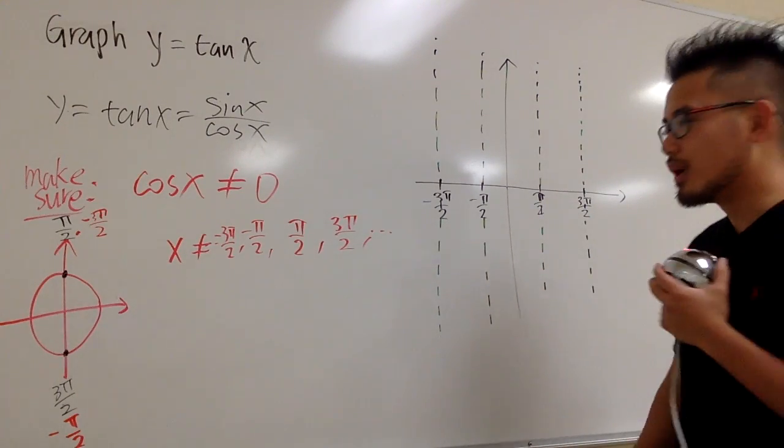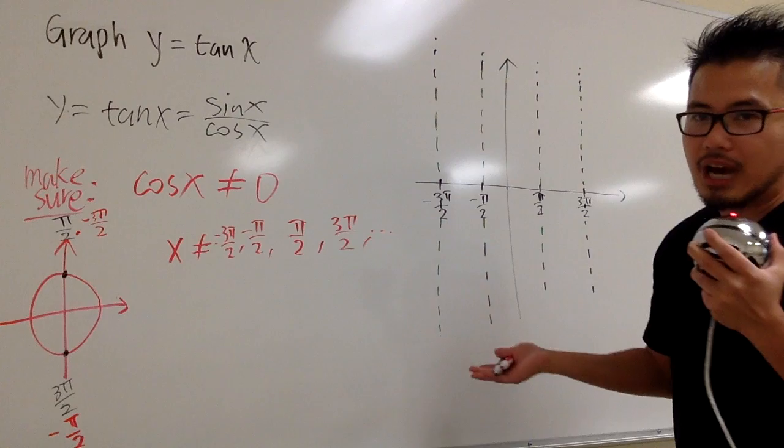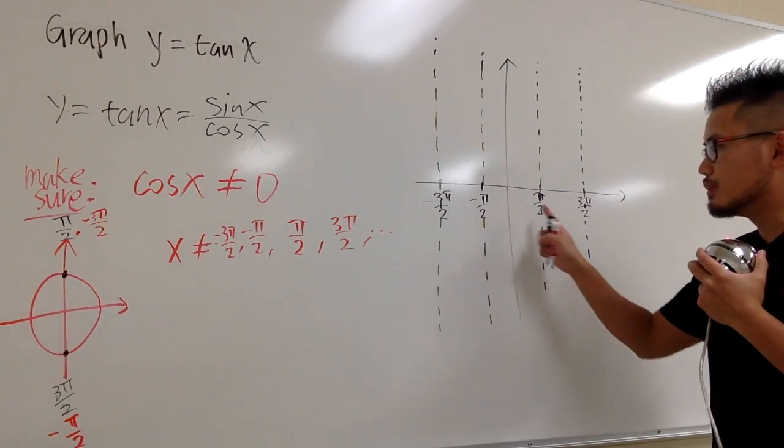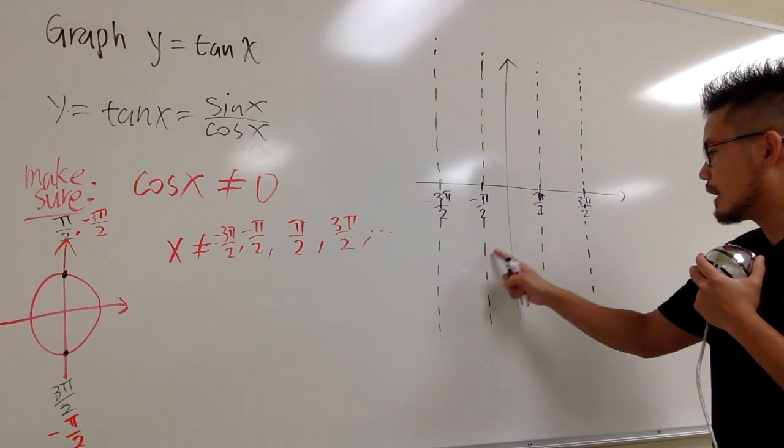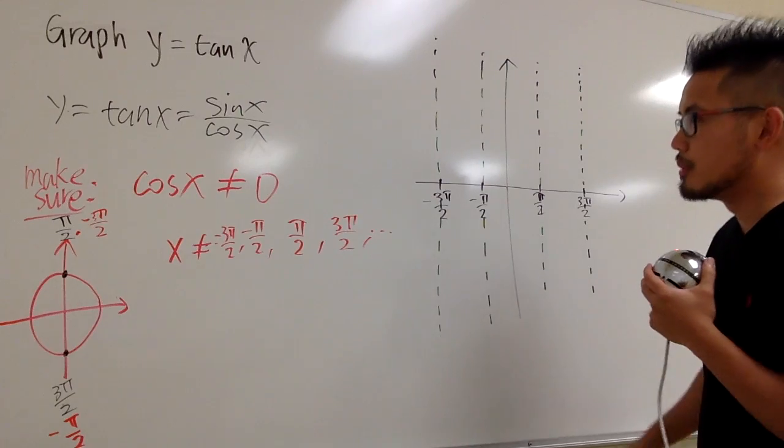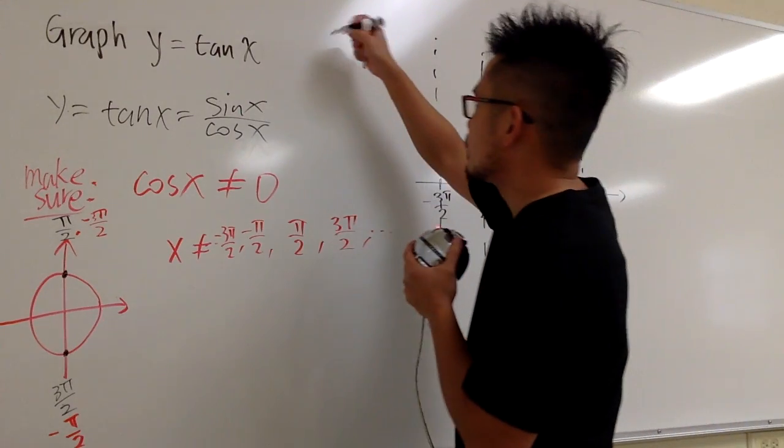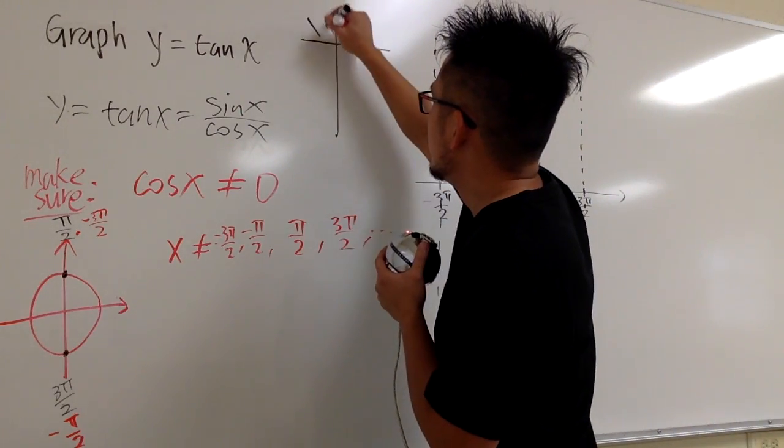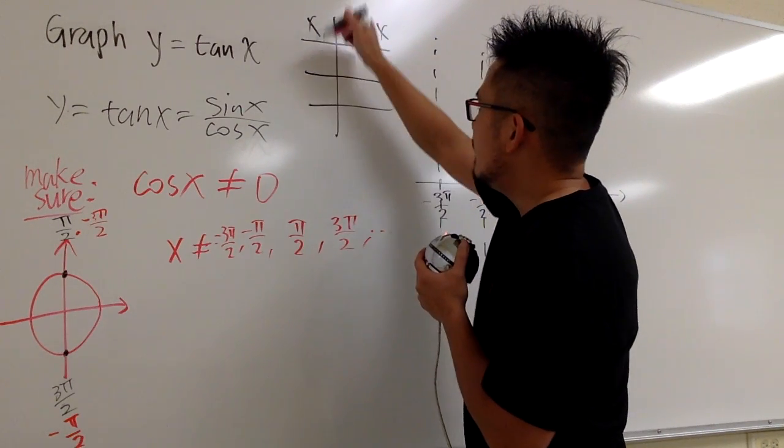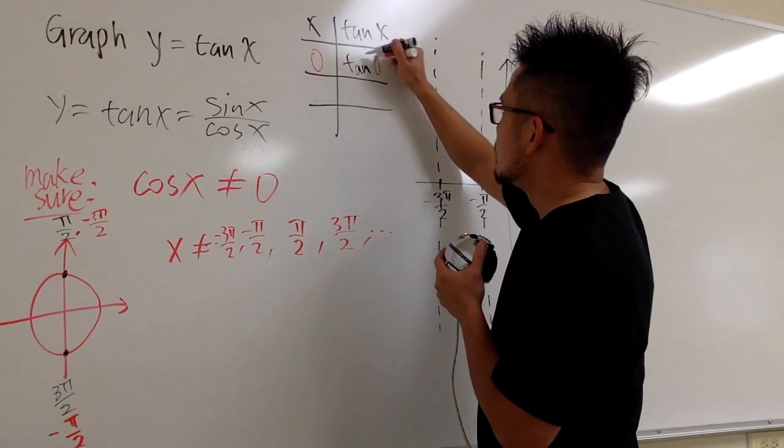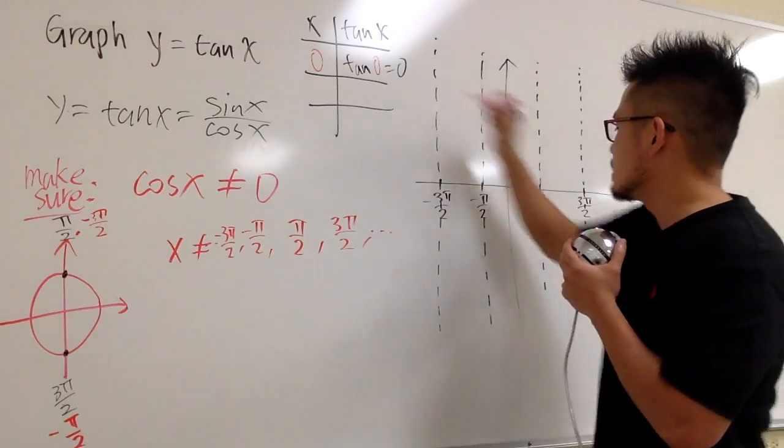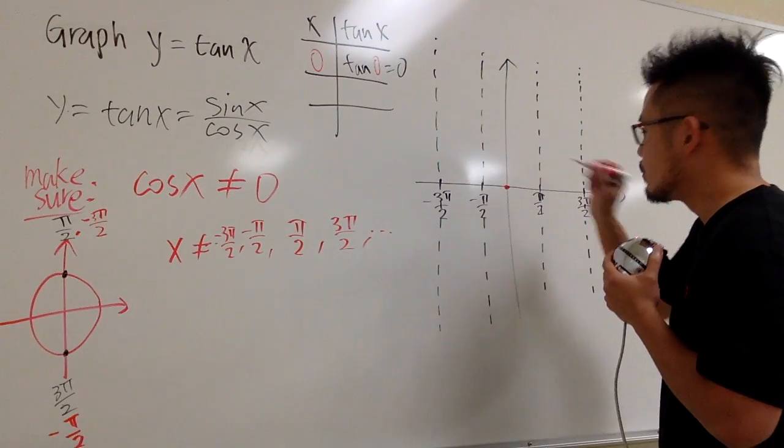All right, and now what? Well, a few more points will be helpful, or you can just kind of remember this. Between two vertical asymptotes, in the middle you have zero, this is something that you can remember as well. But anyways, let me just do a quick table for you right here, x and tangent x. If x is zero, tangent zero, this is going to give us zero. So, we have this point, (0, 0), right here.